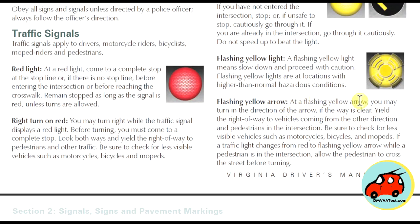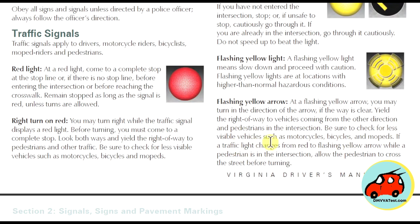At a flashing yellow arrow, you may turn in the direction of the arrow if the way is clear. Yield the right-of-way to vehicles coming from the other direction and pedestrians in the intersection. Be sure to check for less visible vehicles such as motorcycles, bicycles, and mopeds. If the traffic light changes from red to flashing arrow while a pedestrian is in the intersection, allow the pedestrian to cross before turning.